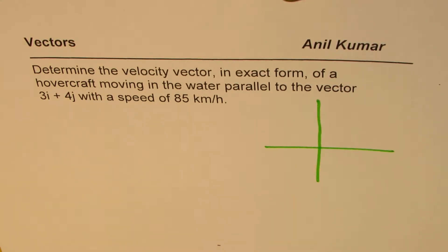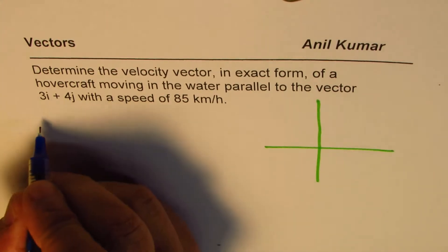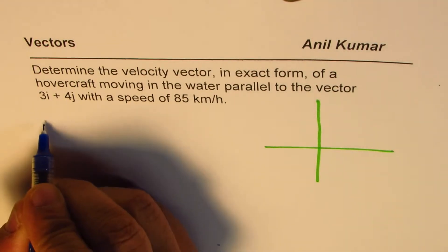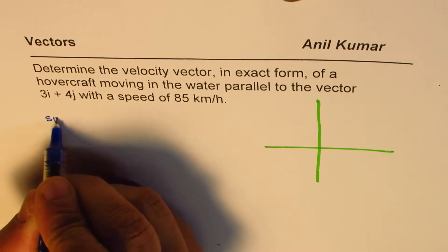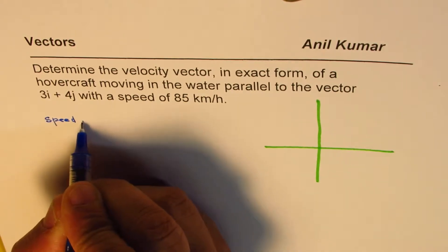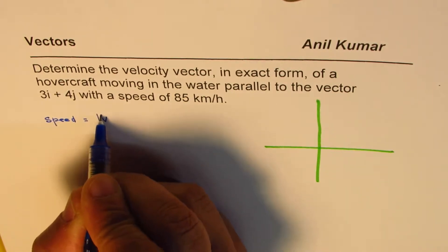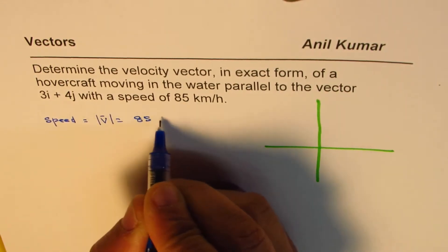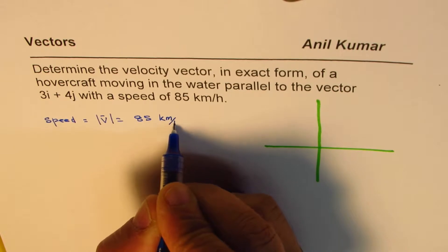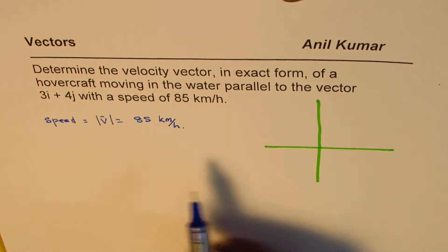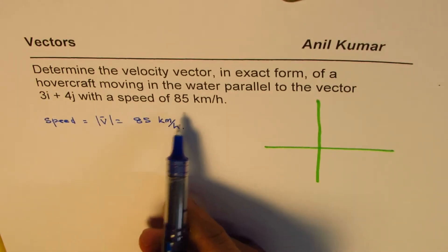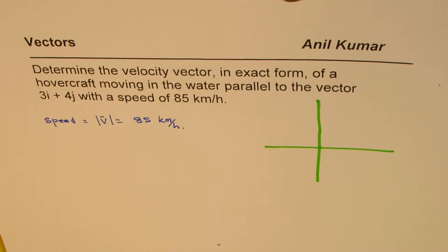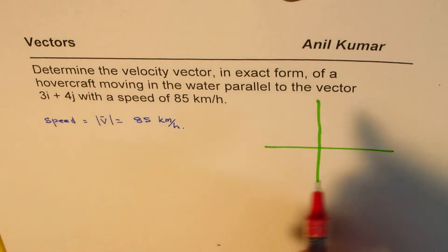Now, when I say that the speed is 85 kilometers, that means we are talking about magnitude. So, speed is basically equals to magnitude of velocity, and that is given to us as 85 kilometers per hour. Now, we are given that this speed is parallel to a vector, which is 3i4j.